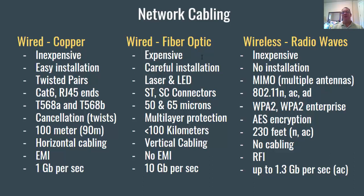Fiber optic cables are used with vertical cabling — not from the switch to the computer, but from switch to switch, networking closet to networking closet, floor to floor, or building to building. Vertical cabling with fiber is typically 10 gigabits per second and does not suffer from electromagnetic interference like copper, because it uses light rather than voltage.